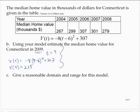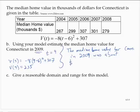So the median home value for Connecticut in 2009 was about $235,000.